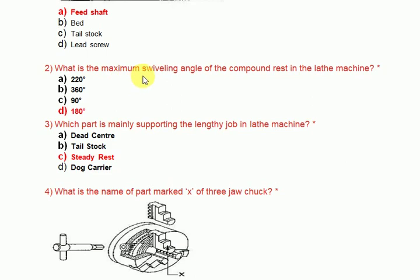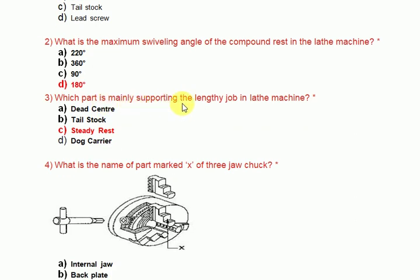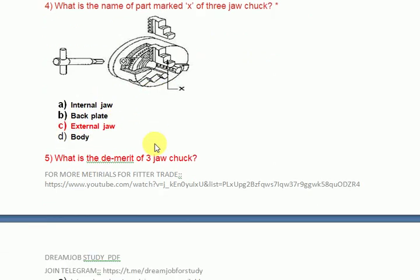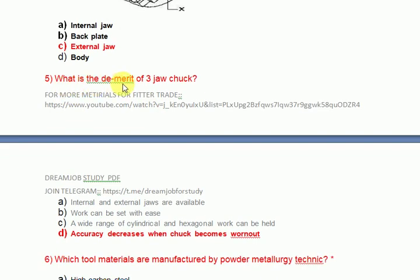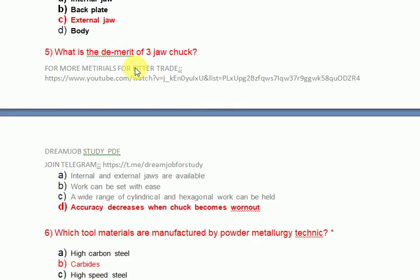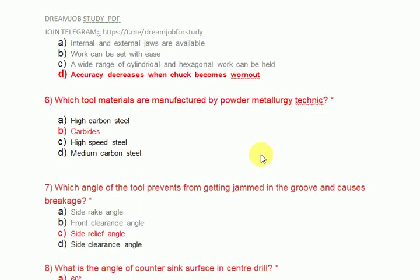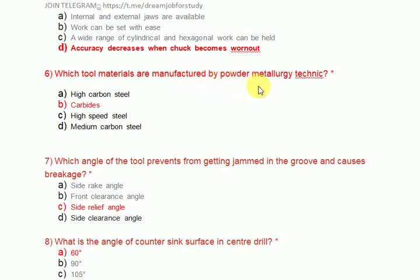What is the maximum swelling angle of the compound rest in the lathe machine? Maximum angle is 180 degrees. Which part is mainly supporting the lengthy job in lathe machines? Lengthy jobs in lathe machines — steady rest. What is the name of the part marked X of three-jaw chucks? It is the external jaw. What is the demerit of three-jaw chucks? Accuracy decreases when the chuck becomes worn out.